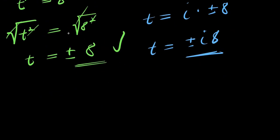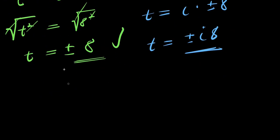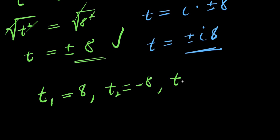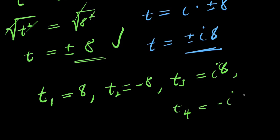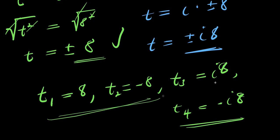So we have four different solutions in total: t1 equals 8, t2 equals negative 8, t3 equals 8i, and t4 equals negative 8i. These are two real solutions and two complex solutions.